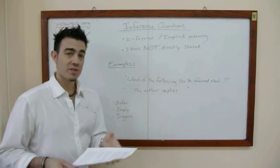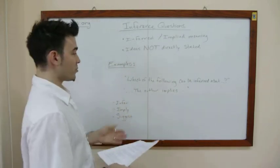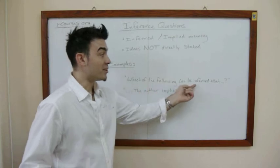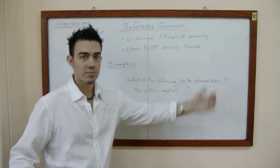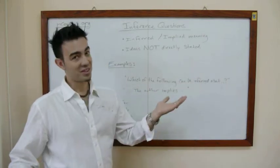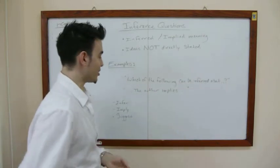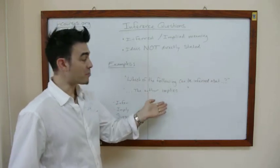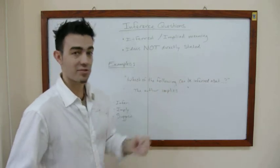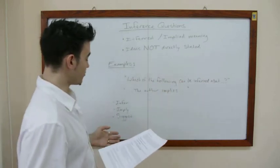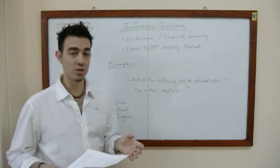Some examples of these types of questions would be: 'Which of the following can be inferred?' Well, if they use that word in the question, you know it's an inference question. Or, 'The author implies this.' There aren't a lot of different words that they can use.